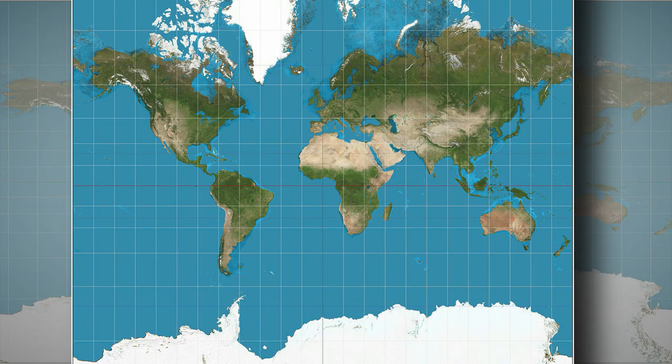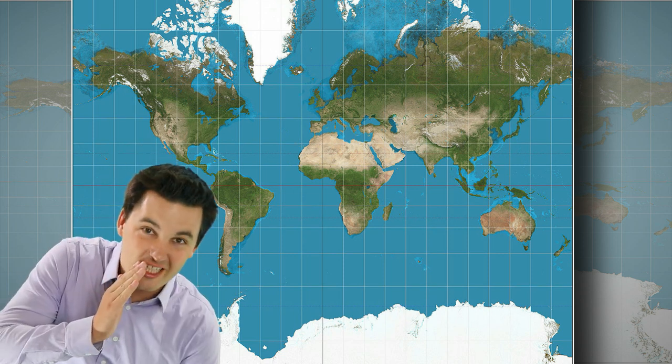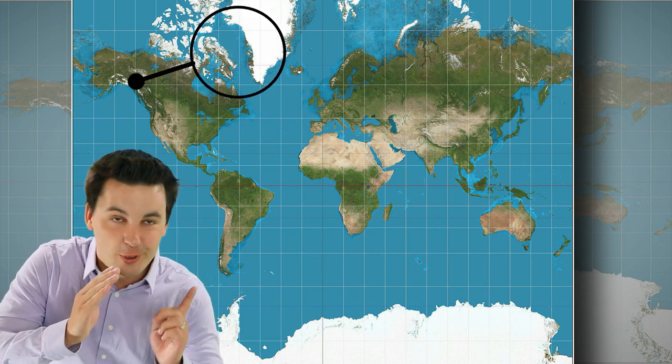For example, when looking at the Mercator map, what do you notice about Greenland and what do you notice about Africa? If you didn't know, this one's Greenland and this one's Africa. If we were just to base our answer off the Mercator map, you're going to probably come to the conclusion that Greenland is significantly larger than Africa. And that could not be further from the truth.